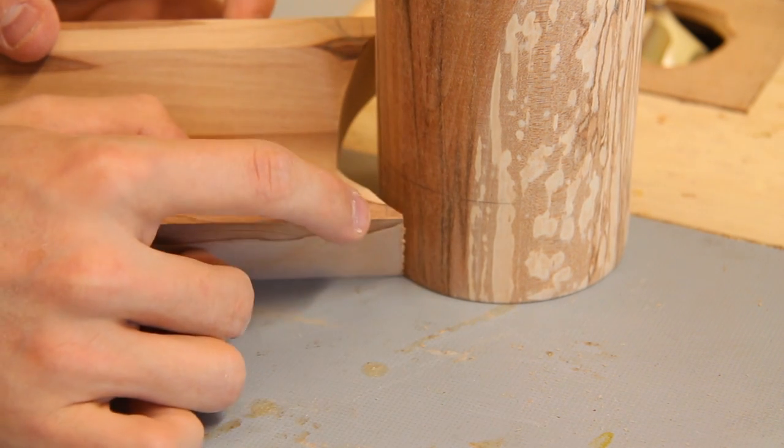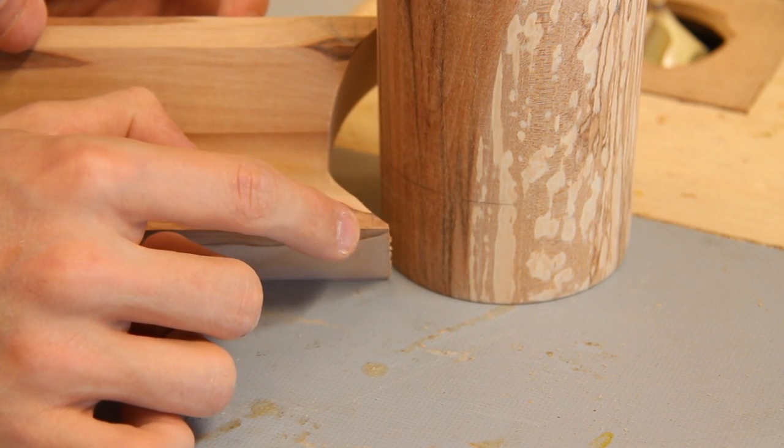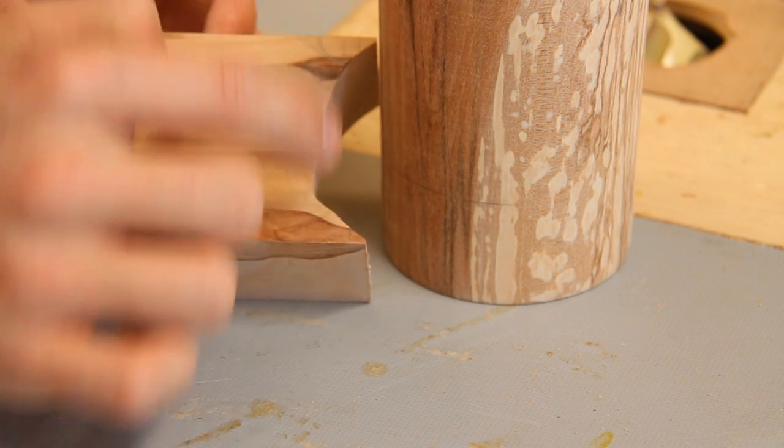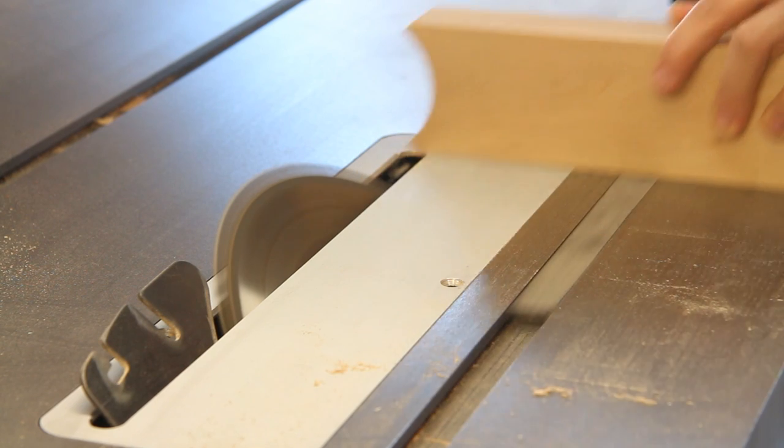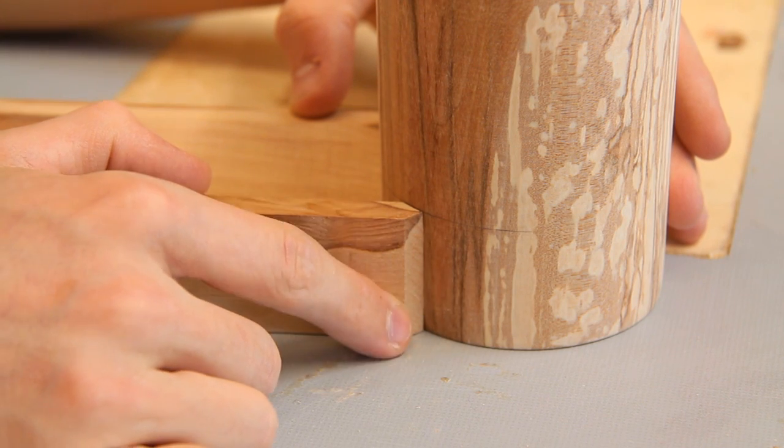So instead of doing that what I'm going to try and do instead is just to cut a small flat on each side and hopefully the result will look a little bit better. As you can see what I actually decided to do was to cut a small chamfer leading in towards the cup.